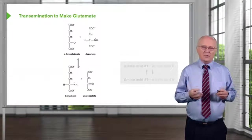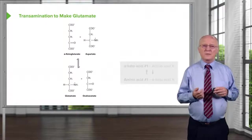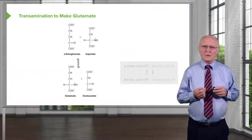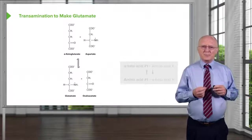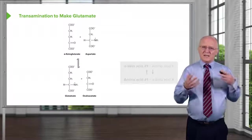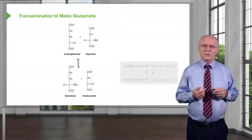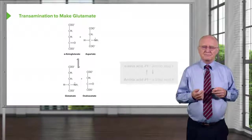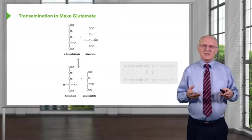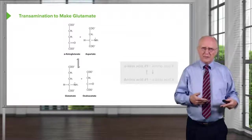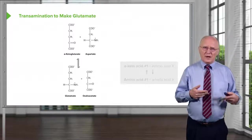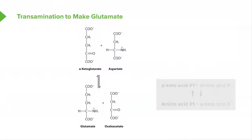We see here alpha-ketoglutarate, our precursor for all amino acids in this family. To its right is the amino acid aspartate, which is the donor of the amine group that will help make glutamate. Starting at the top left, alpha-ketoglutarate becomes glutamate on the bottom left, and in the process aspartate becomes oxaloacetate on the lower right.